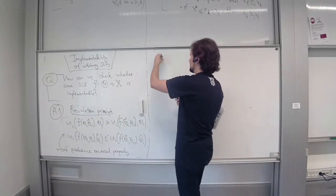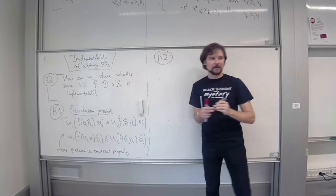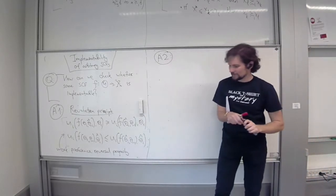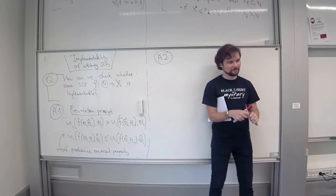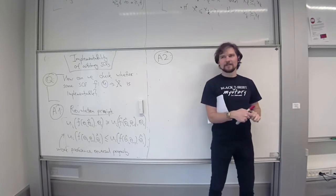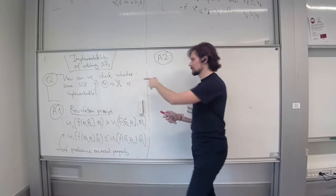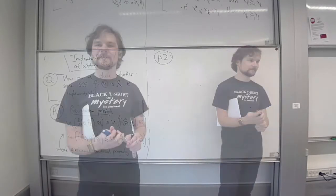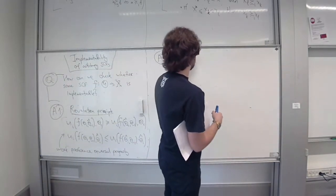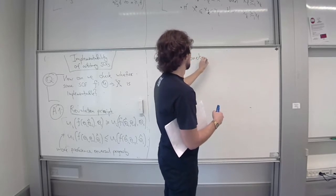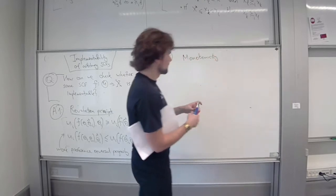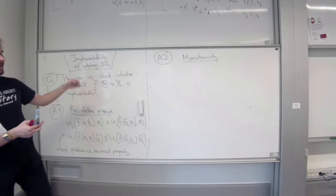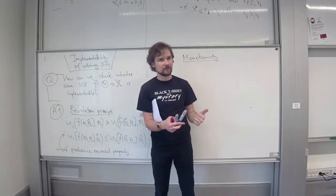Now we can mention the second answer to this initial question that we saw in class. What other quick criterion, quick requirement towards social choice functions have we seen? Maybe not in the general setting, but in some settings? Monotonicity. Bingo. When we were discussing revenue equivalence, we said that in those quasi-linear settings, the allocation key must be monotone.